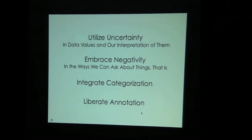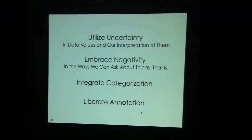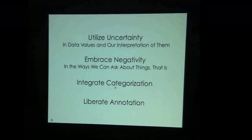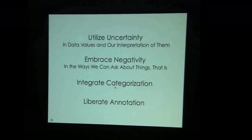Can we take advantage of uncertainty, or at least integrate capability to handle uncertainty into the visualization process? Can we embrace negativity — we want to be able to ask not-questions, like show me cases in which this person was not involved, or show me things that did not involve this particular city. We want to integrate categorization in some way. It would be very powerful for people to be able to interactively and visually say, this set of people I want to hypothesize were related in this particular way — to color them, group them, and see that and work with it visually.